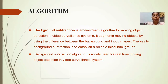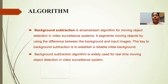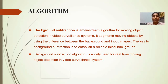The algorithm of our project is background subtraction, a mainstream algorithm for moving object detection in visual surveillance systems. It finds the difference between the foreground and the background in the detection process. The key to background subtraction is to establish a reliable initial background, and it is widely used for real-time motion detection in video surveillance systems.